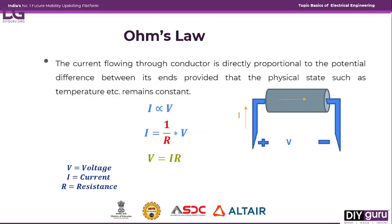Now, the statement of Ohm's Law: Ohm's Law states that the current flowing through a conductor is directly proportional to the voltage. If we take a conductor — you can see it in the picture — it has two terminals. When we provide a potential difference (voltage V) across these two terminals, there is a flow of current through the conductor. The amount of current flow is directly proportional to the potential difference applied across its terminals, with temperature and other physical quantities remaining constant.